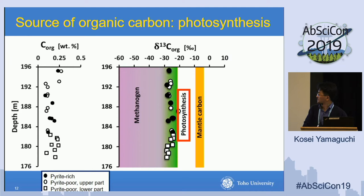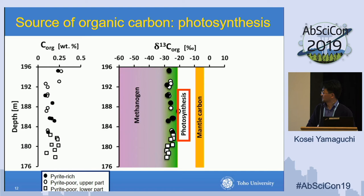I also measured the carbon isotope composition of organic carbon, and the values are mostly around -25 per mil, which is not particularly special. This is just showing the origin of organic carbon in the samples, which may reflect photosynthetic activity in the upper ocean.